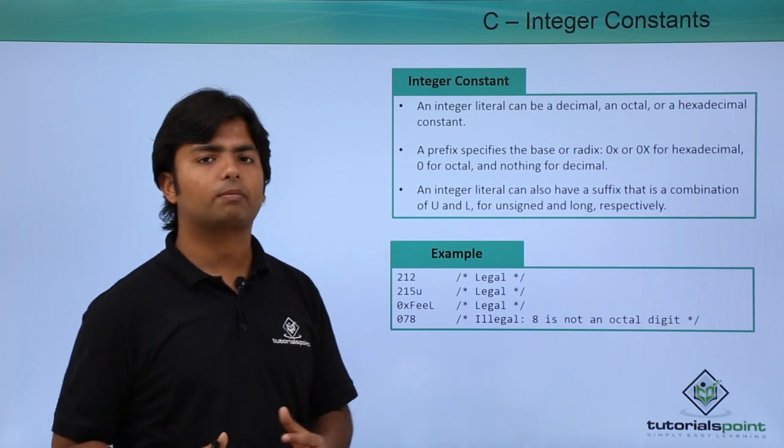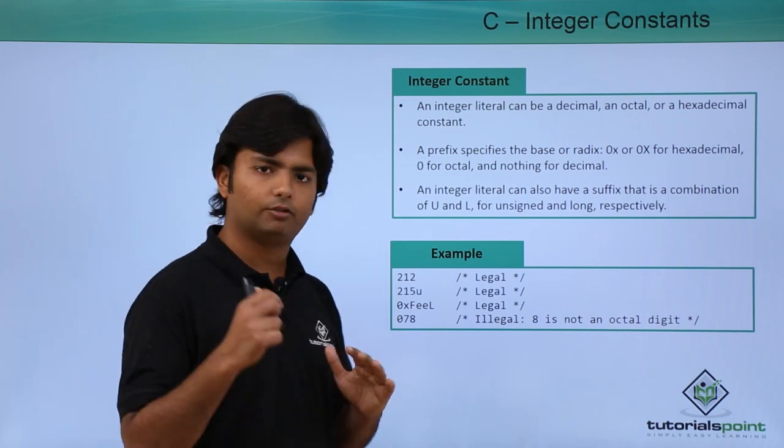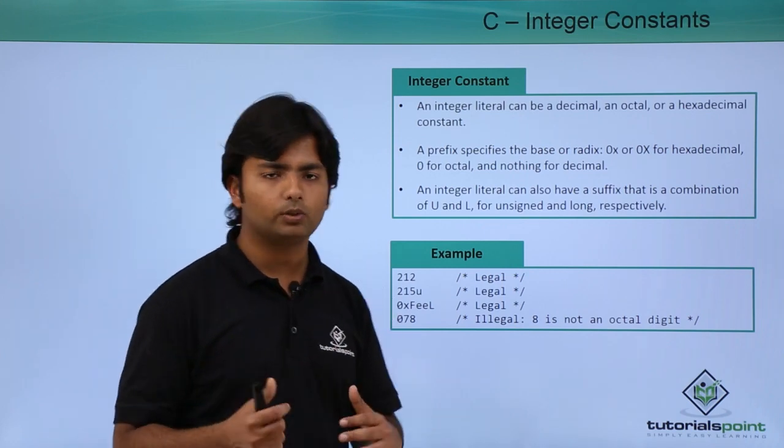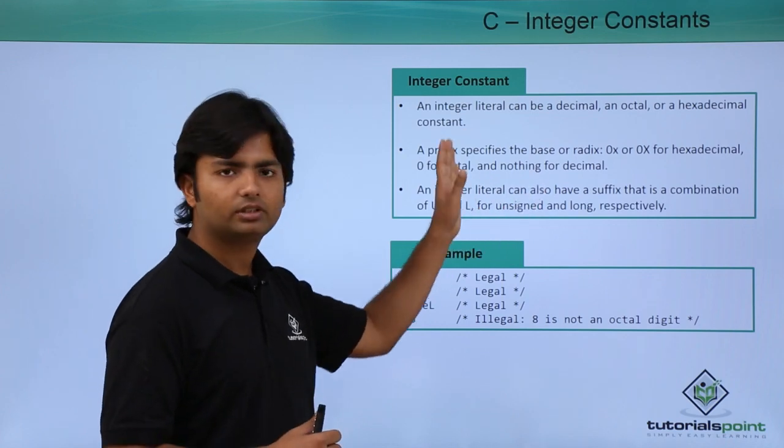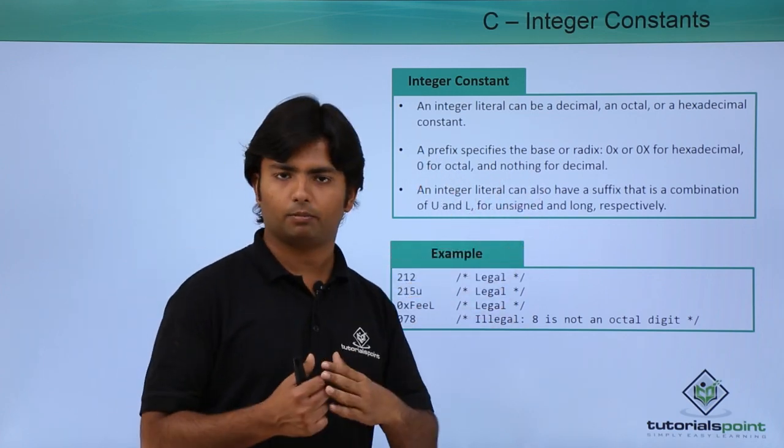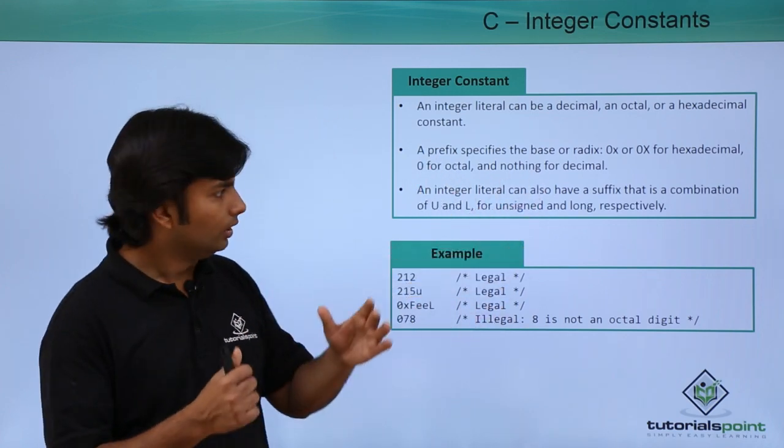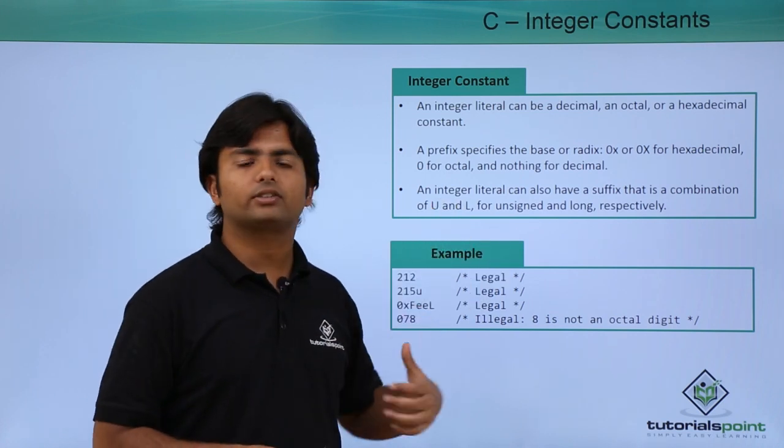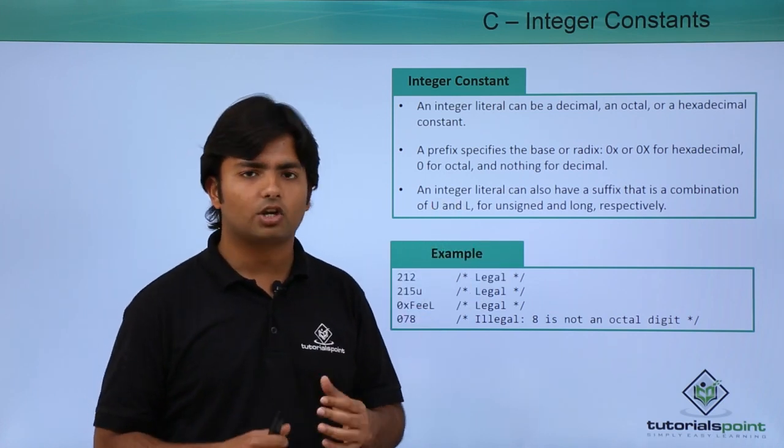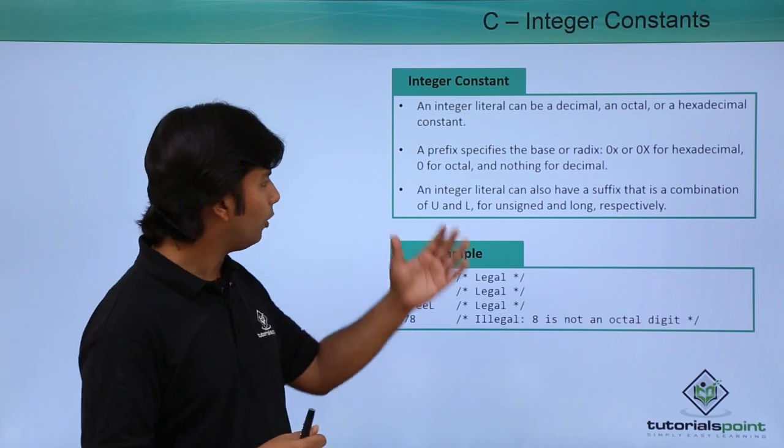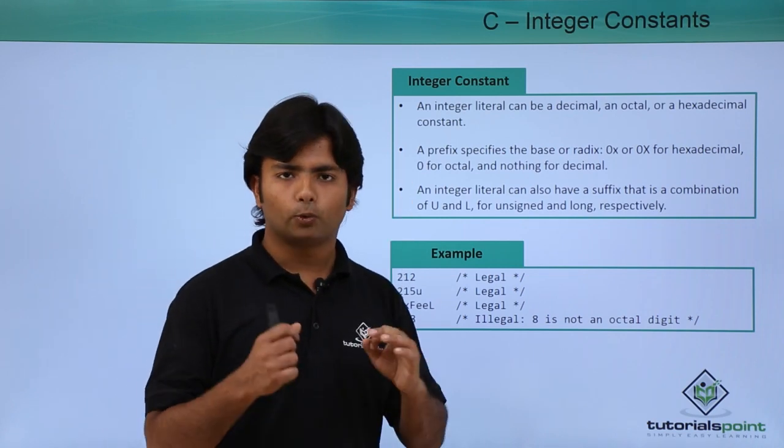As here, this is not a valid octal value because you can see 8 in octal values will not be a part of that. But still, if you want to start an octal value, you can prefix zero before the actual value. So this is how you can start writing any integer constant. Let's see how we can assign any integer with hexadecimal or octal values practically.